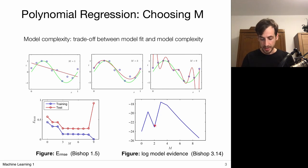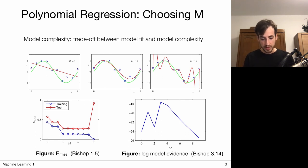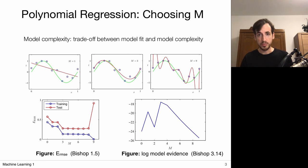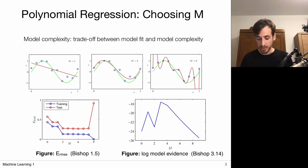We're increasing model complexity without improving predictions, so the likelihood itself isn't really improving. As shown earlier, the model evidence is a combination of a likelihood term and a complexity term. We see that complexity increases but likelihood doesn't, so model evidence decreases. When we add x to the power three, we obtain a very nice fit — the fitting behavior improves and results in a nice increase in model evidence. With m=3 we can do a pretty decent fit.